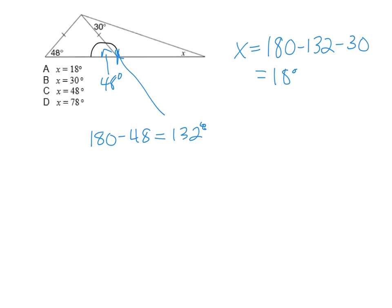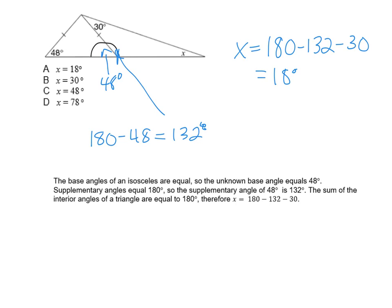Now I have to justify my answer. Because this takes three steps, instead of writing it on screen I'm going to say what I would write and then post it as an image. In my justification I would say: the base angles of an isosceles are equal, so the unknown base angle equals 48 degrees. Supplementary angles equal 180 degrees, so the supplementary angle of 48 degrees is 132 degrees. The sum of the interior angles of a triangle equals 180 degrees; therefore x equals 180 minus 132 minus 30. If it takes more than one step, you need to justify each step and each unknown angle you solved in order to find x.